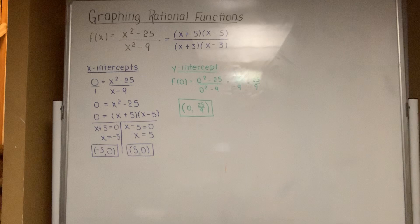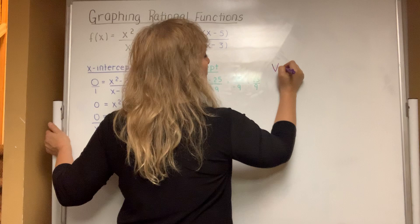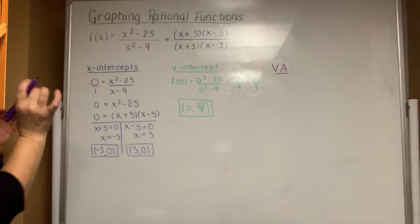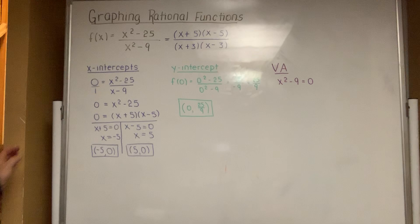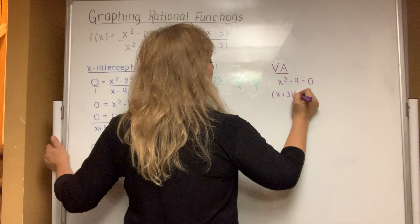The next thing asked is whether there is a vertical asymptote. You can abbreviate it with VA for vertical asymptotes. All you have to do is set the denominator equal to zero. When you solve — because it's a quadratic — you factor using dots: x plus 3 times x minus 3 equals zero.